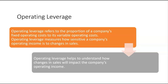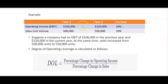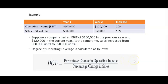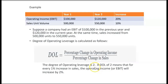For example: in year one operating income was $100,000 and in year two it was $120,000 — a 20% increase. Over that same period, sales unit volume went from 500,000 to 550,000 units — a 10% increase. The degree of operating leverage (DOL) is calculated as percent change in operating income divided by percent change in sales: 20% divided by 10% equals a DOL of 2. A DOL of 2 means for every 1% increase in sales, operating income increases by 2%.